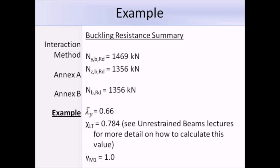In a full calculation, you would have to carry out the buckling resistance checks as well, but for the purpose of this example, we'll leave it out, and we'll use the summary of results instead. We have the buckling resistance about both axes. NBYARD is 1469 kN, NBZRD is 1356 kN, lambda bar Y equals 0.66, chi LT equals 0.784 from the LTB check, and gamma M1 equals 1. These values are important, and we will be using them later.